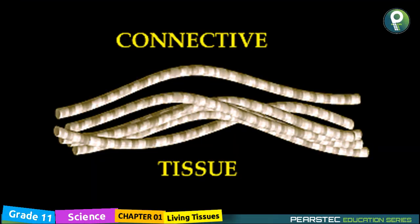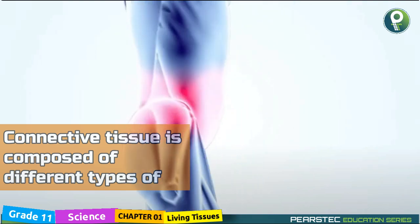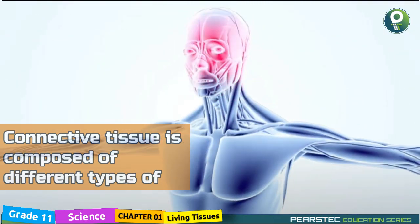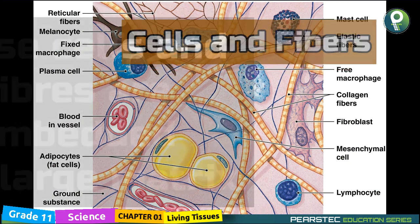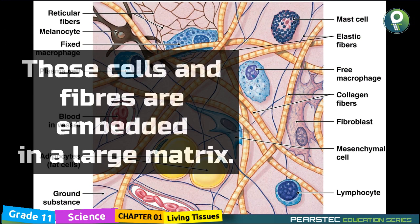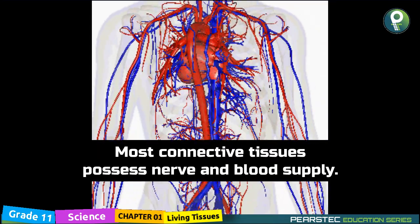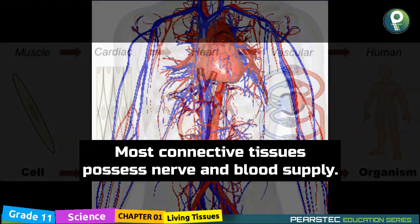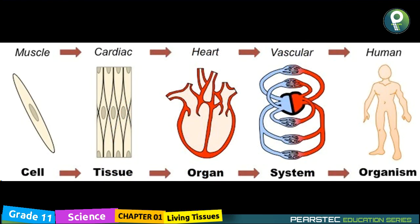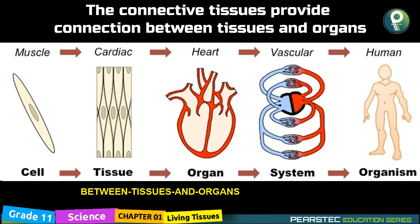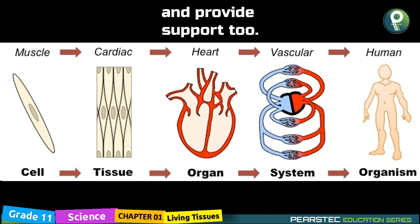Connective tissue is composed of different types of cells and fibres. These cells and fibres are embedded in a large matrix. Most connective tissues possess nerve and blood supply. The connective tissue provides connection between tissues and organs, and also provides support.